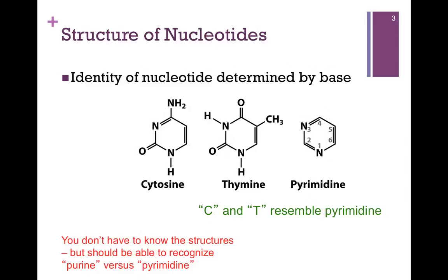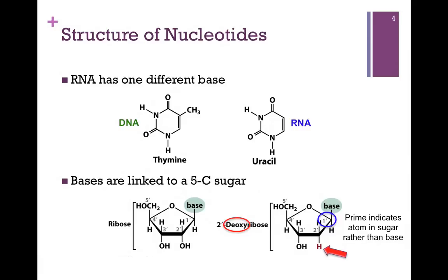Let me just reassure you, you don't have to know the individual structures of the four nucleotides, but you should be able to recognize a base as a purine or pyrimidine. Let me also point out the numbering system here. As you can see on the far right, it's a very simple numbering system. We number those atoms with whole integers just to indicate the number of the atom we're referring to in the base.